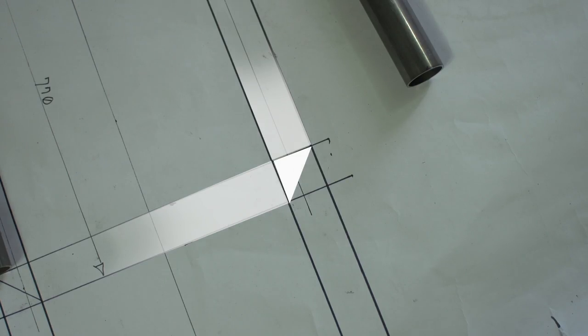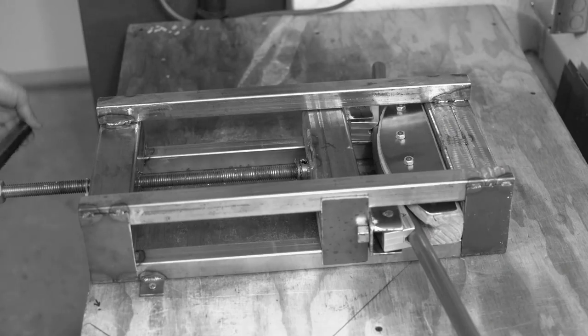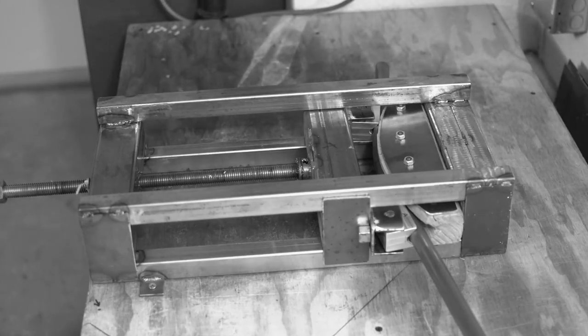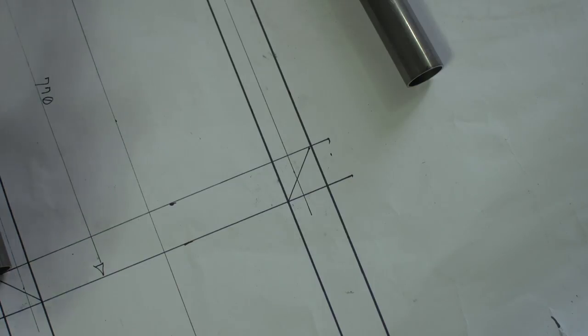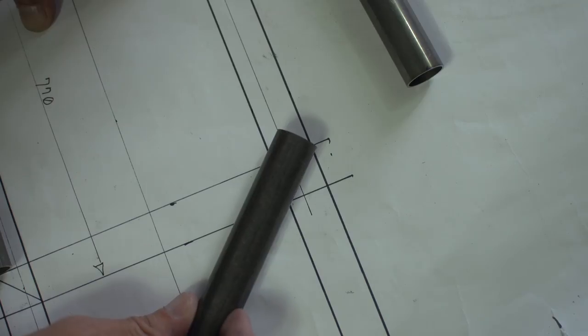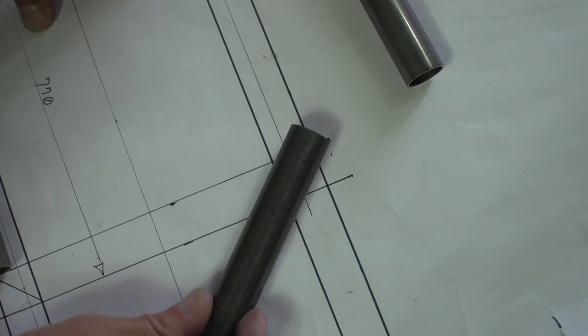I couldn't bend the tubes because there's no way I'd get such a sharp radius with the bender, and I don't own a bender. This thing is not a bender, it's a press, and it's not capable of producing the bend I would need. So instead, here I am cutting a wedge from a tube. On paper it looked good, but in reality I ran into a problem.